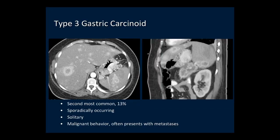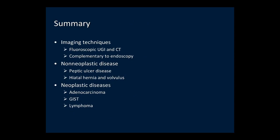The type 3 gastric carcinoid is the second most common and consists of sporadically occurring, generally solitary carcinoids with very aggressive malignant behavior. An arterial phase image shows an enhancing mass in the posterior stomach with liver and spleen metastases. In summary, we've discussed upper GI and CT imaging techniques of the stomach complementary to endoscopy, and reviewed neoplastic and non-neoplastic diseases of the stomach. Thank you very much for your attention.